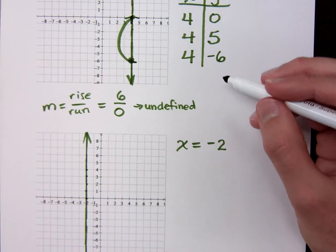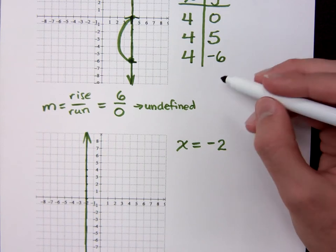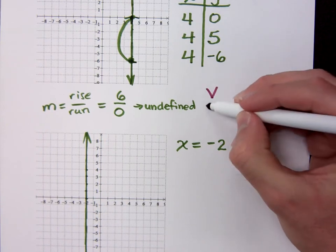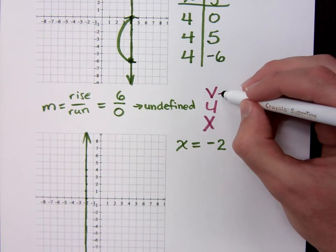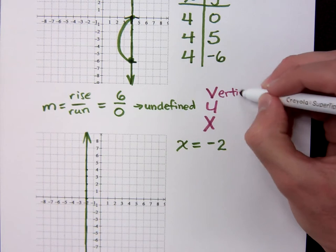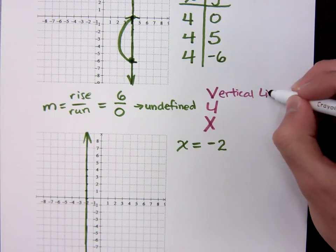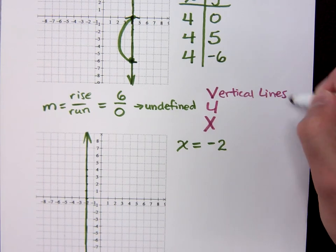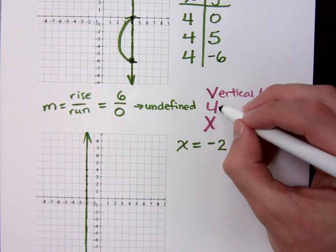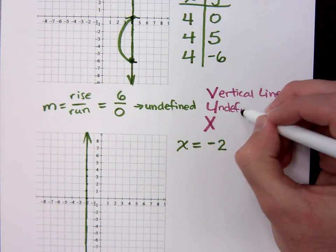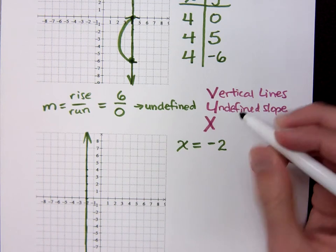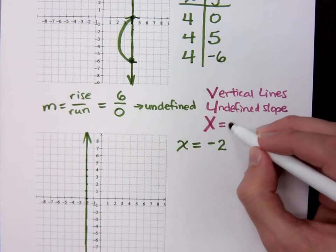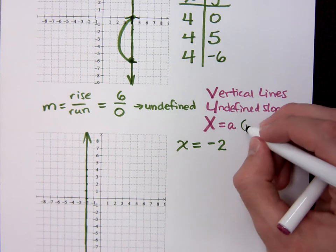So the slope for a vertical line is going to be undefined. Now, we talked about HOI, right? Then we're going to talk about VUX. V stands for vertical line, so it's very similar to what we have with horizontal lines. Vertical lines have U, stands for undefined slope. And this is when X is equal to just a number, and you have no Y term.